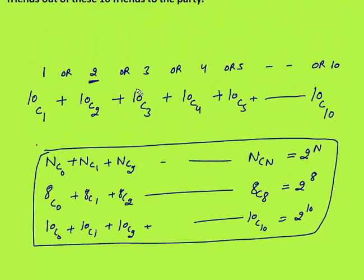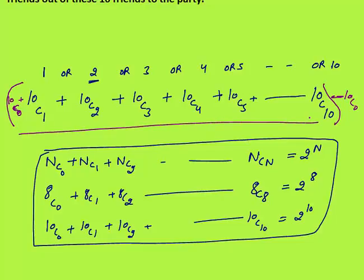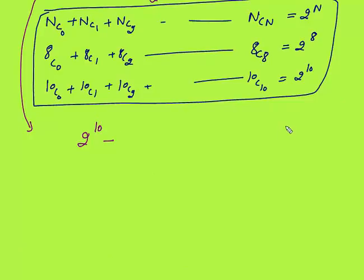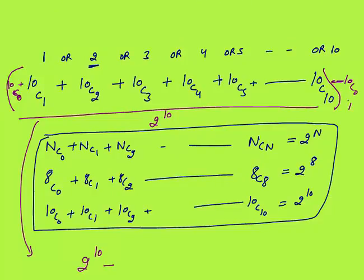I need to calculate 10C1 to 10C10. What I will do is add 10C0 here and subtract 10C0 here — no change, same number added and subtracted. I know that 10C0 to 10C10 complete gives me 2 raised to power 10. And 10C0 equals 1. So my final answer is 2 raised to power 10 minus 1.